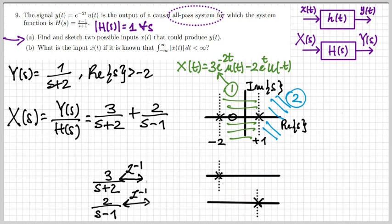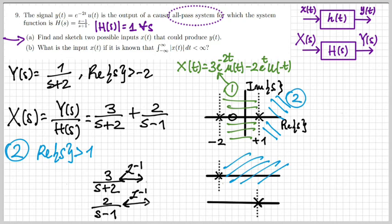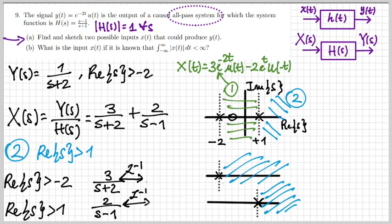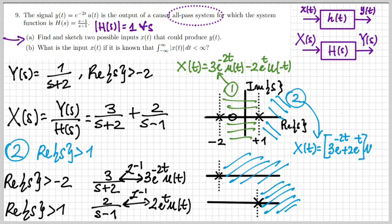For case 2 (blue, Re(s) > 1): both terms must converge to the right, so both anti-transforms are right-sided signals. The result is x(t) = 3·e^(−2t)·u(t) + 2·e^t·u(t). We have now found the two possible inputs x(t) that could produce the given y(t). We can sketch them to visualize: case 1 has a decaying exponential for positive times and a mirrored decaying exponential for negative times; case 2 has a decaying exponential plus a growing exponential that diverges to infinity.